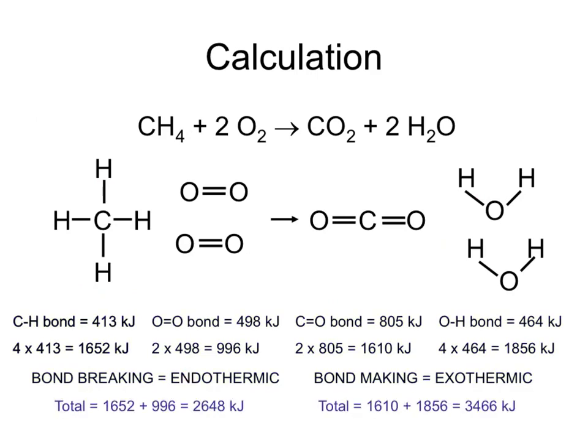Adding up these figures, the energy required is 2,648 kilojoules, but the energy given out is 3,466 kilojoules — and that's more. So overall, this reaction is exothermic to the tune of 818 kilojoules, because the energy given out in making new bonds is greater than the energy required to break the existing bonds.